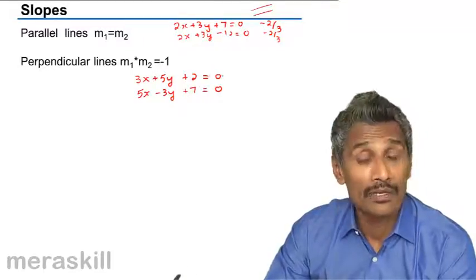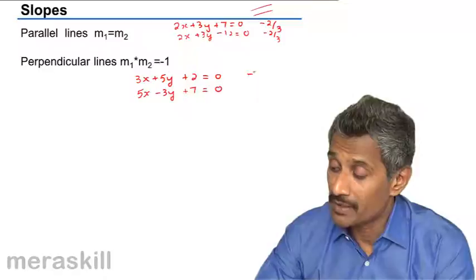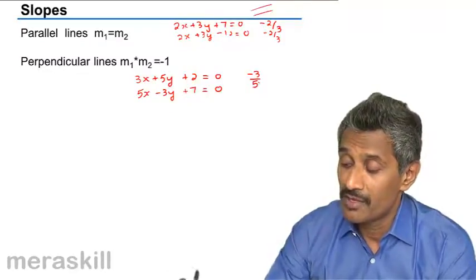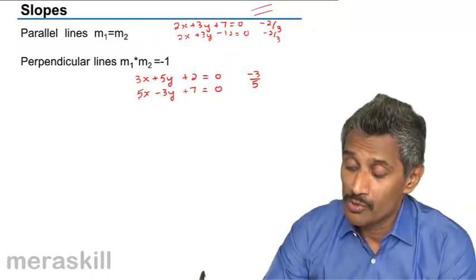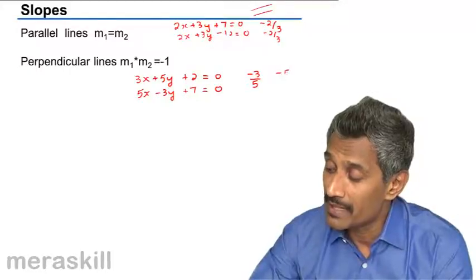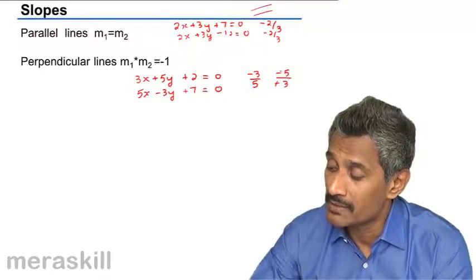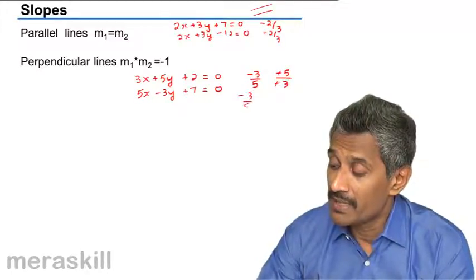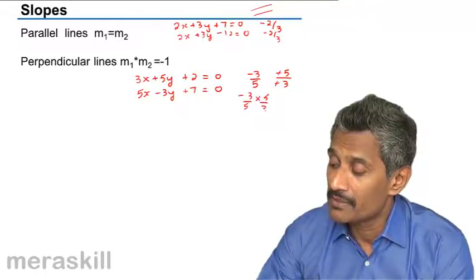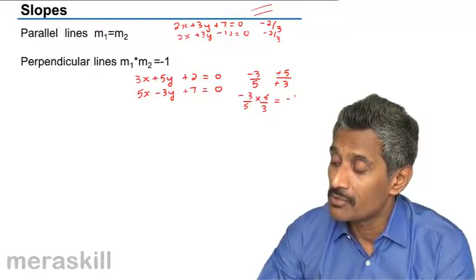For this one, the slope is going to be minus a by b, that is minus 3 by 5. For this one, the slope is going to be minus a by b, that is minus 5 by minus 3. Now minus 3 by 5 into 5 by 3 is turning out to be minus 1.